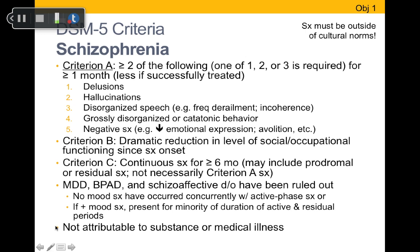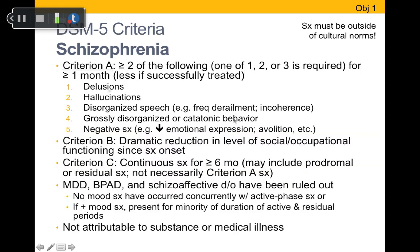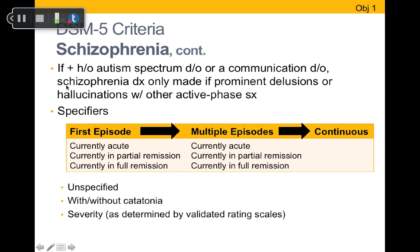None of the symptoms should be attributable to substance use or medical illnesses. Additionally, if a person has a history of autism spectrum disorder or a communication disorder, you can only make the schizophrenia diagnosis if they have prominent delusions or hallucinations, since many symptoms of autism or communication disorders can overlap with disorganization and negative symptoms.